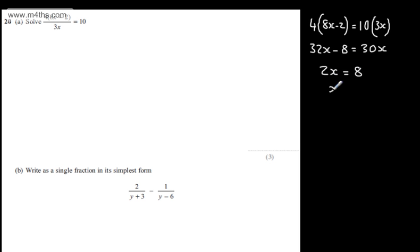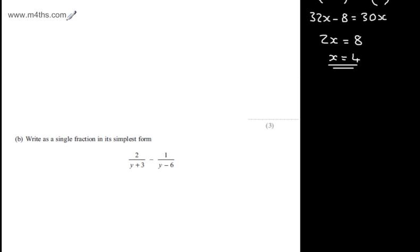Dividing both sides by 2, x will be equal to 4. So that's the answer now for three marks. If you want to go ahead and check that, simply plug x is equal to 4 in and it will hold true for both sides of the equation.